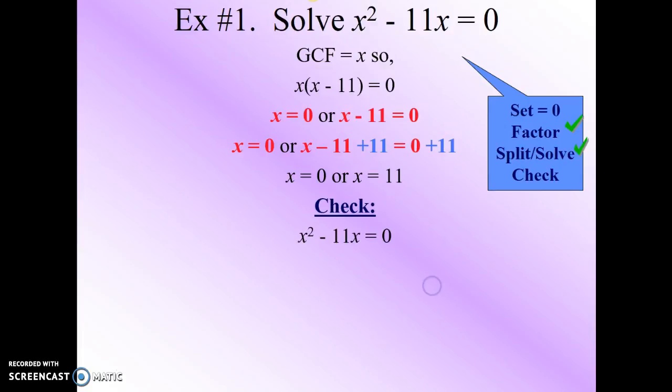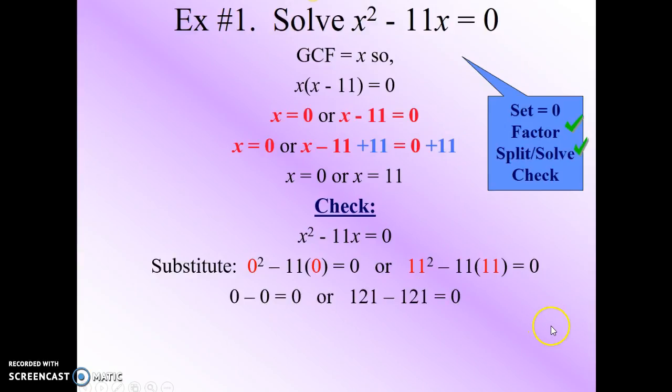Now let's check it. Substituting 0 in and 11 in, we get 0 squared minus 11 times 0 equals 0, or 11 squared minus 11 times 11 equals 0. So 0 equals 0, and 121 minus 121 equals 0. So again, 0 equals 0. So it checks. Our solution set is 0, 11.